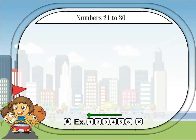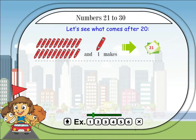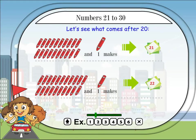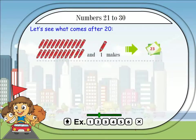Numbers twenty-one to thirty. Let's see what comes after twenty. Twenty and one makes twenty-one. Twenty-one and one makes twenty-two. Twenty-two and one makes twenty-three.